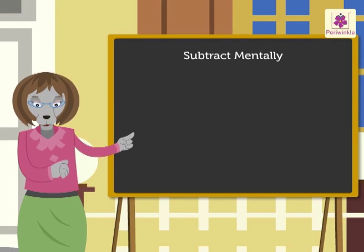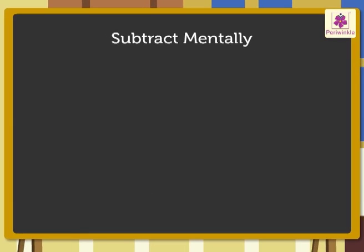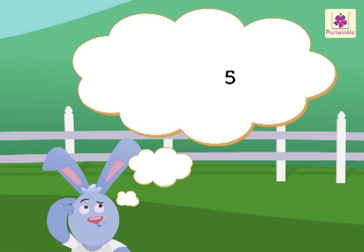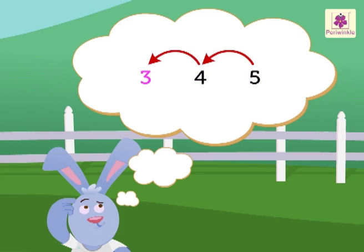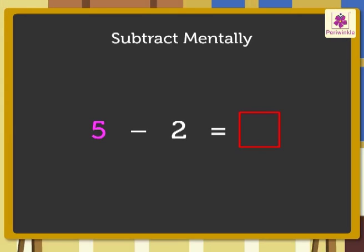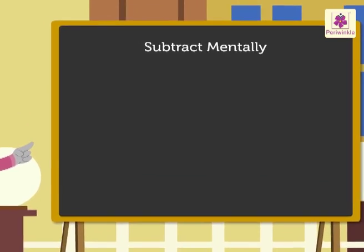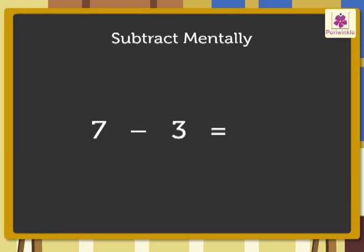Today we are also going to learn how to subtract mentally. Let's take an example: five minus two. First, think of the number five, then count two steps backward from five: five, four, three. So we get the difference as three. Hence, five minus two is equal to three.